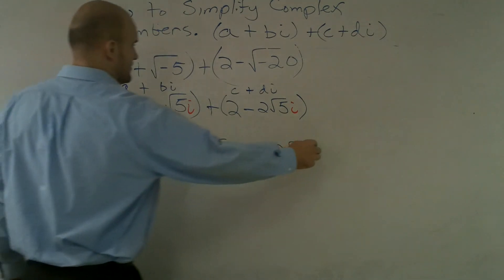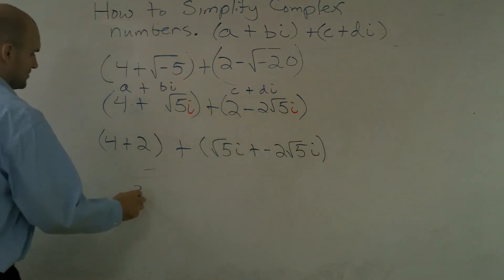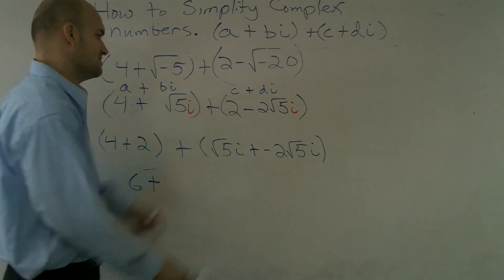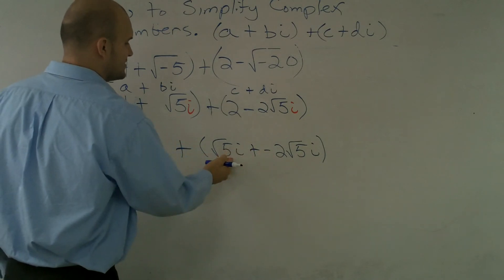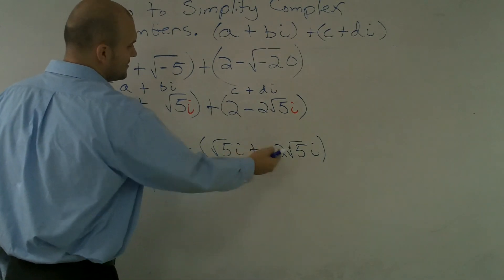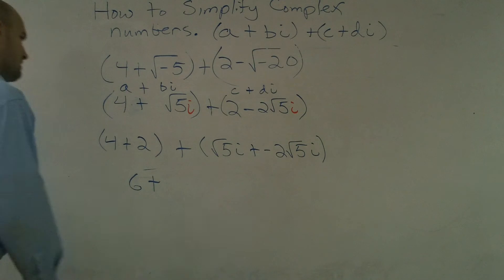In parentheses, 4 + 2 becomes 6. If you notice, this is going to be √5i plus a negative 2√5i.